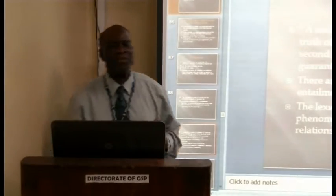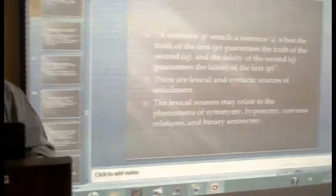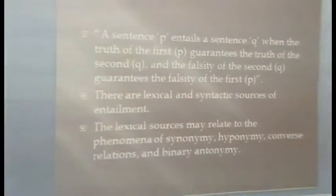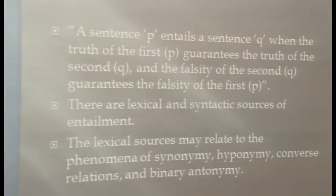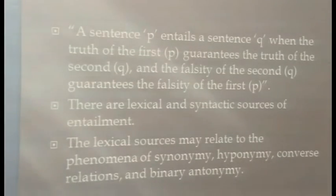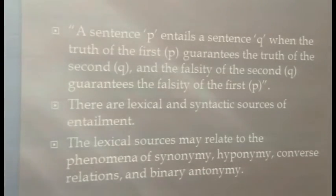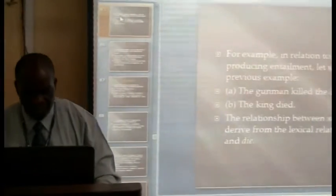According to Professor Said in 1997, we can formulate a truth-based definition of entailment as follows: a sentence P entails a sentence Q when the truth of P guarantees the truth of Q, and the falsity of Q guarantees the falsity of P. There are lexical and syntactic sources of entailment, meaning we can recognize entailment by the presence of certain keywords and sentence structure.